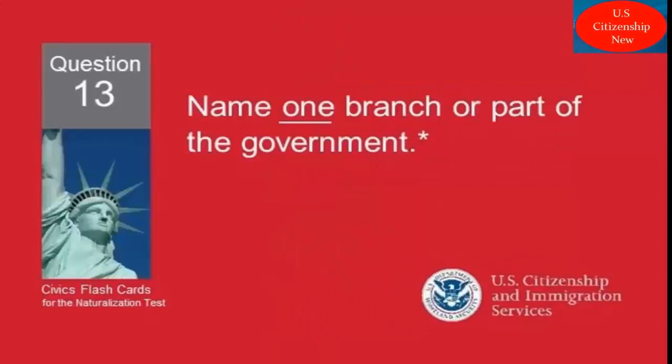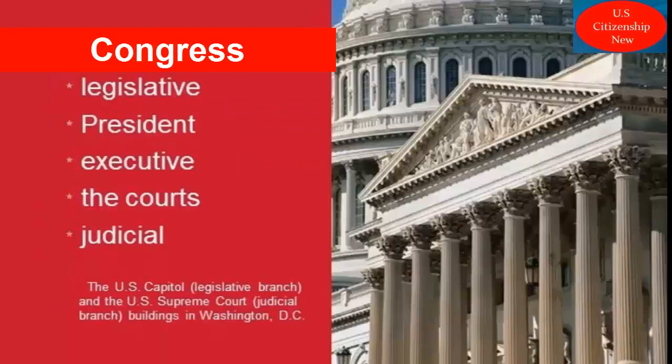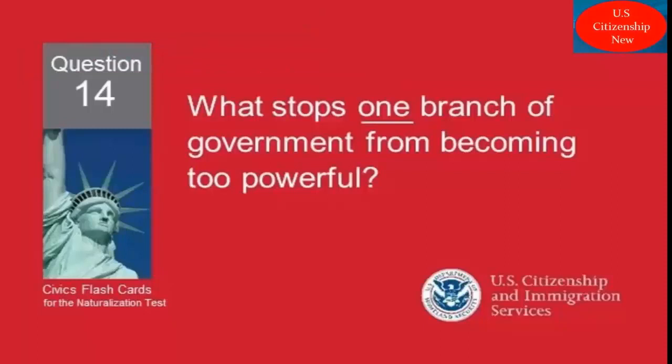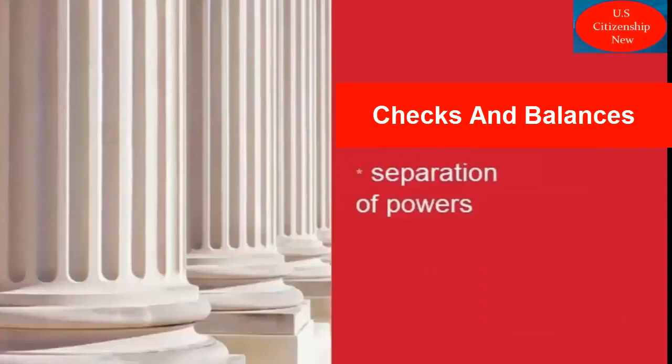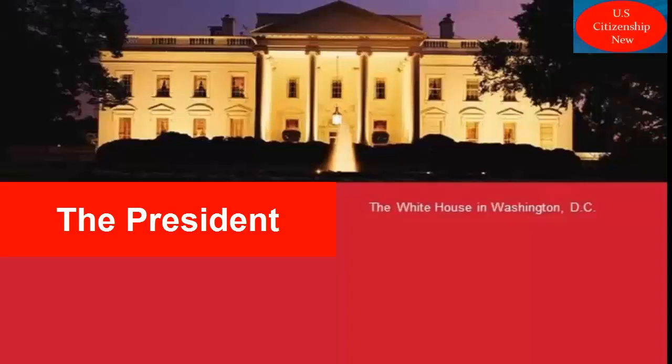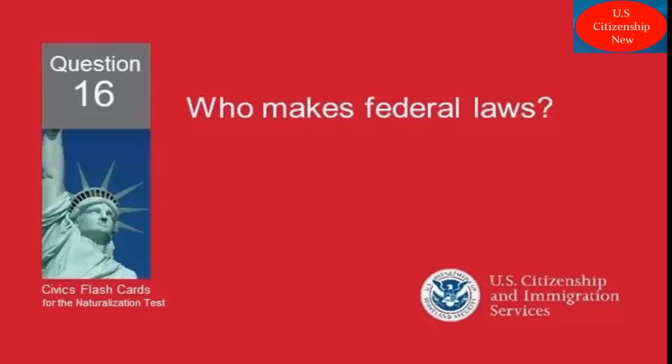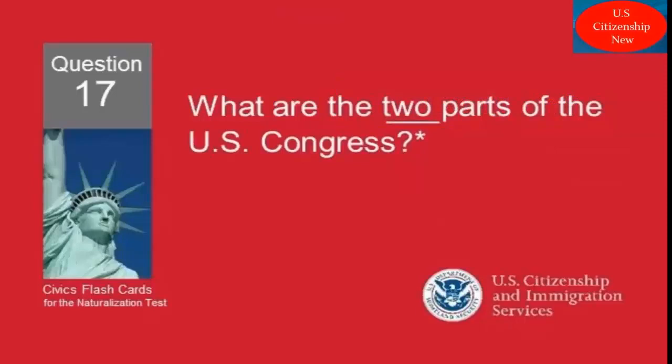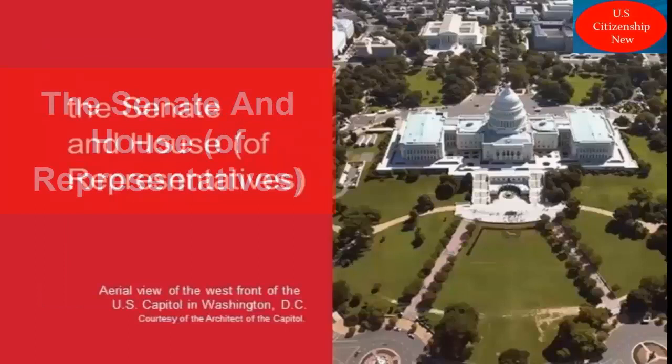Name one branch or part of the government. Congress. What stops one branch of government from becoming too powerful? Checks and balances. Who is in charge of the executive branch? The president. Who makes federal laws? Congress. What are the two parts of the U.S. Congress? The Senate and House of Representatives.